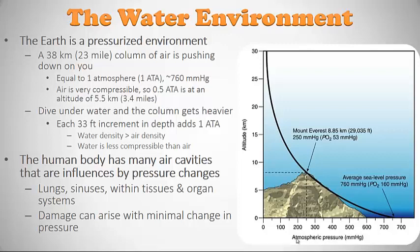On the horizontal axis we see atmospheric pressure measured in millimeters of mercury, from 100 up to 700 mmHg. Standing at sea level, a big column of air pushes on top of you, exerting roughly one atmosphere — equivalent to 760 mmHg. That gigantic column of air is 23 miles high. Air is very compressible, so half an atmosphere is reached at roughly five kilometers altitude.